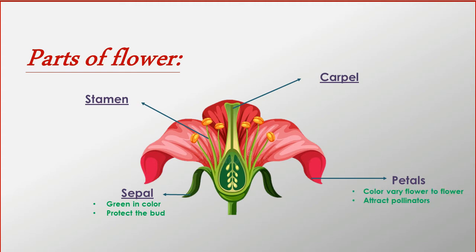Inside the sepals, there are a number of brightly colored petals. The color of petals may vary from flower to flower. These petals attract pollinators, which suck nectar from the flower and in turn facilitate pollination.